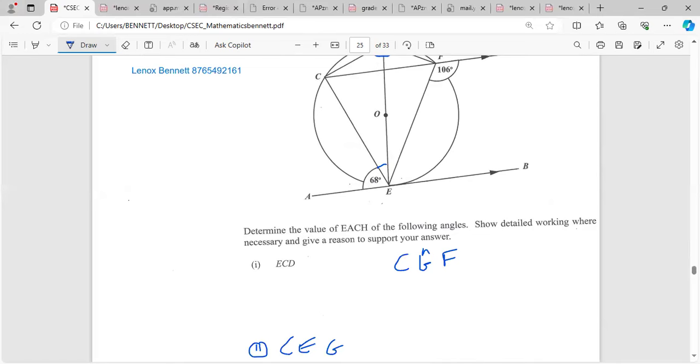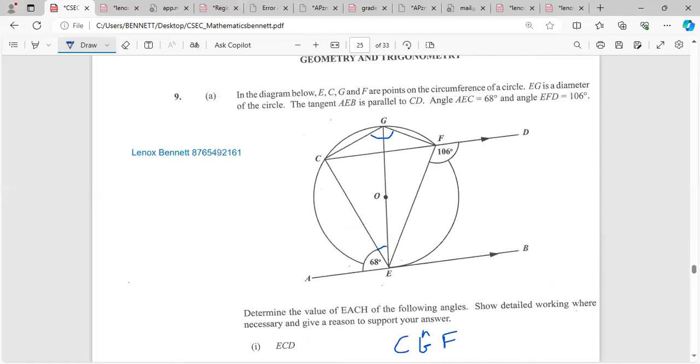In the diagram below, ECG and F are points on the circumference of a circle. This is a diameter, and the tangent AEB is parallel to CD. Very important - this line is parallel to this line, and angle EFD is 106. I'm going to look at ECB first, which is this angle right here.